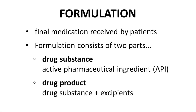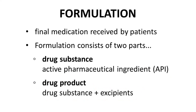Drug formulation is a large research field that designs the final medication that will be administered to patients. In drug discovery, most design efforts focus on a biologically active compound that causes the therapeutic effect — the drug substance, also called the active pharmaceutical ingredient or API. The final medication is called the drug product and includes both the drug substance and excipients. Excipients are materials that may improve properties such as drug dissolution or absorption in the body, or improve the storage stability of the medication. Materials like bulking agents in a pill are also excipients. Formulation research for a specific drug varies widely based on the route of administration. Developing a formulation for an injectable drug is very different from formulation research for an oral drug.